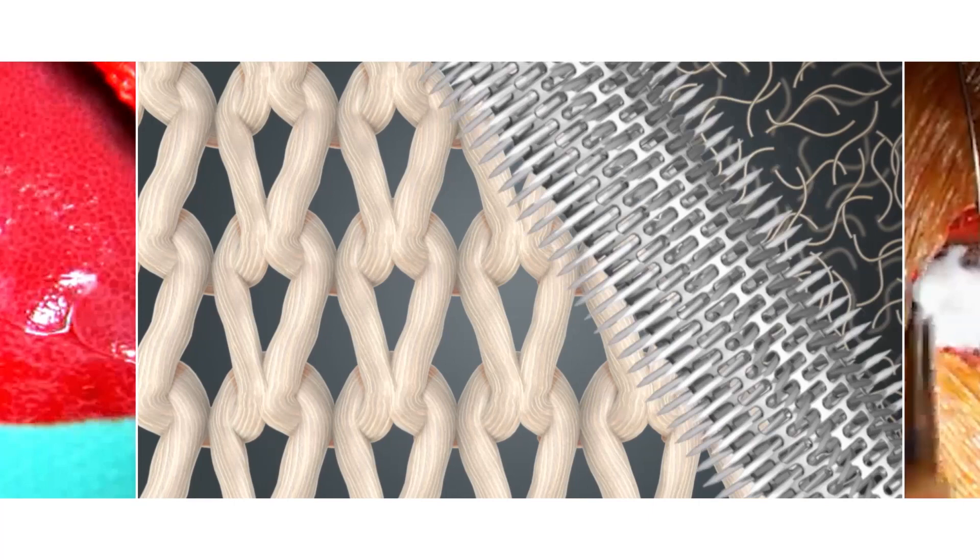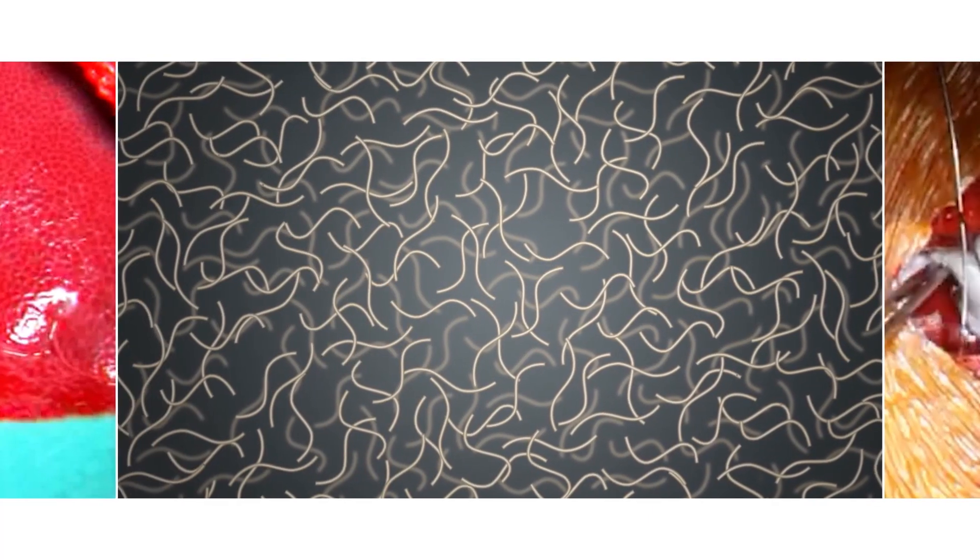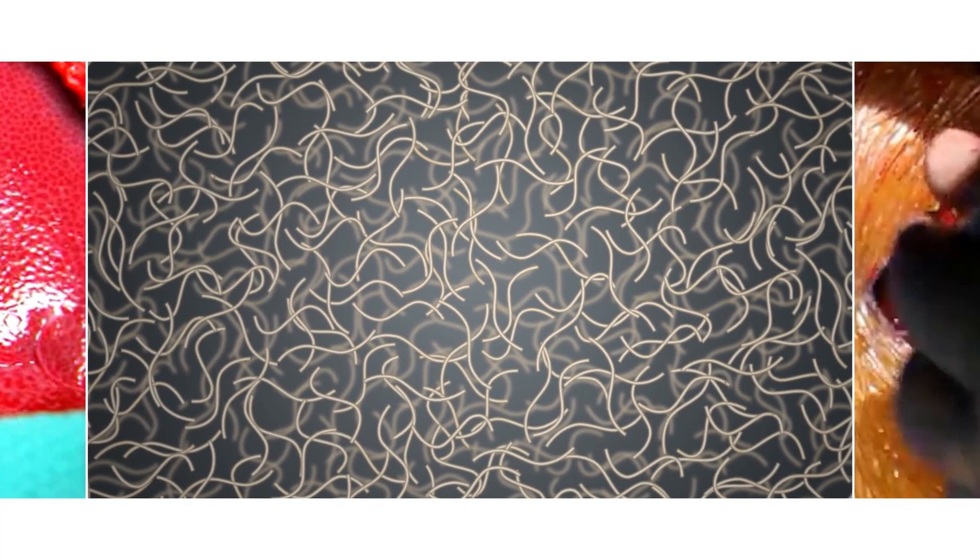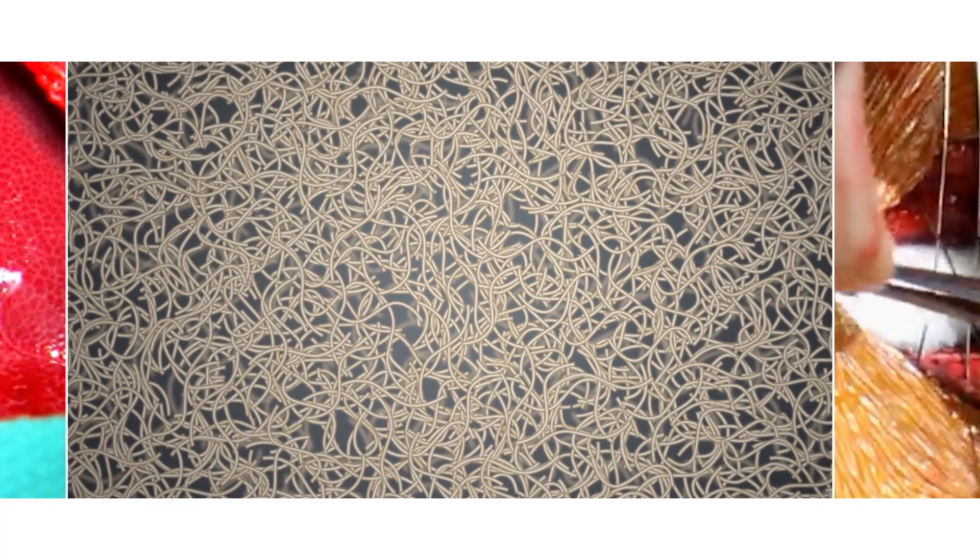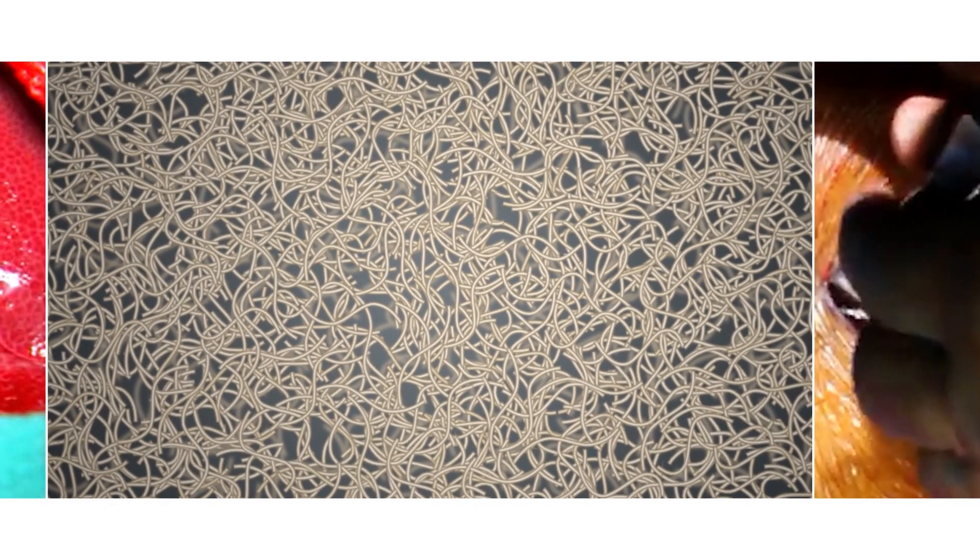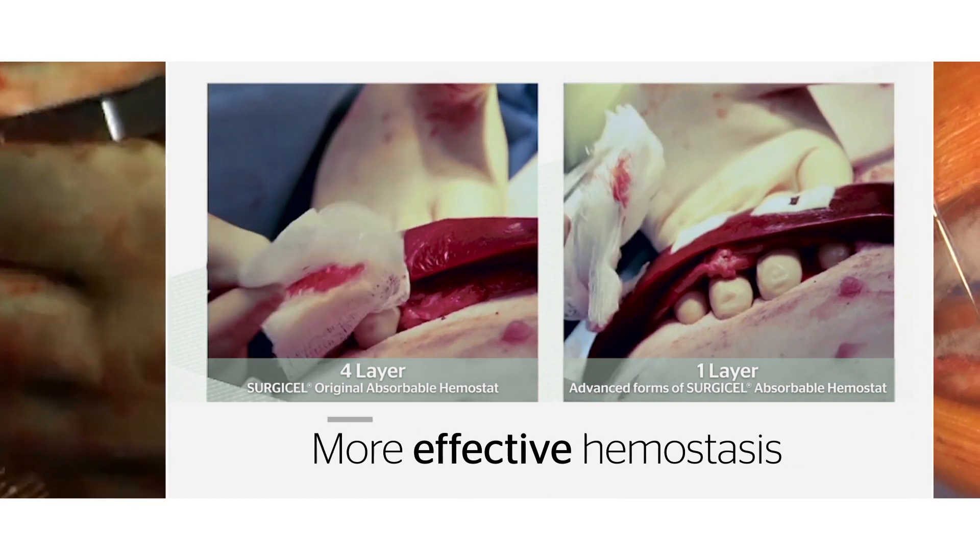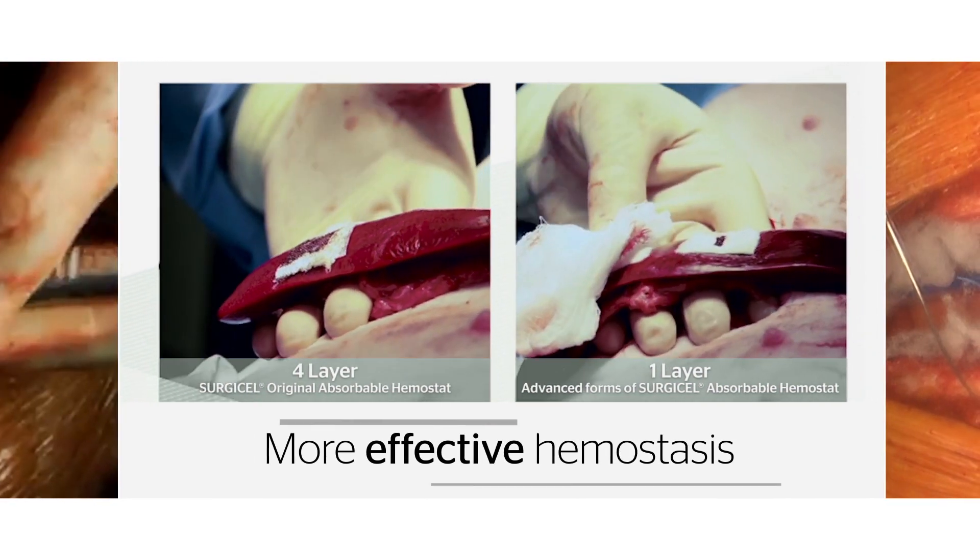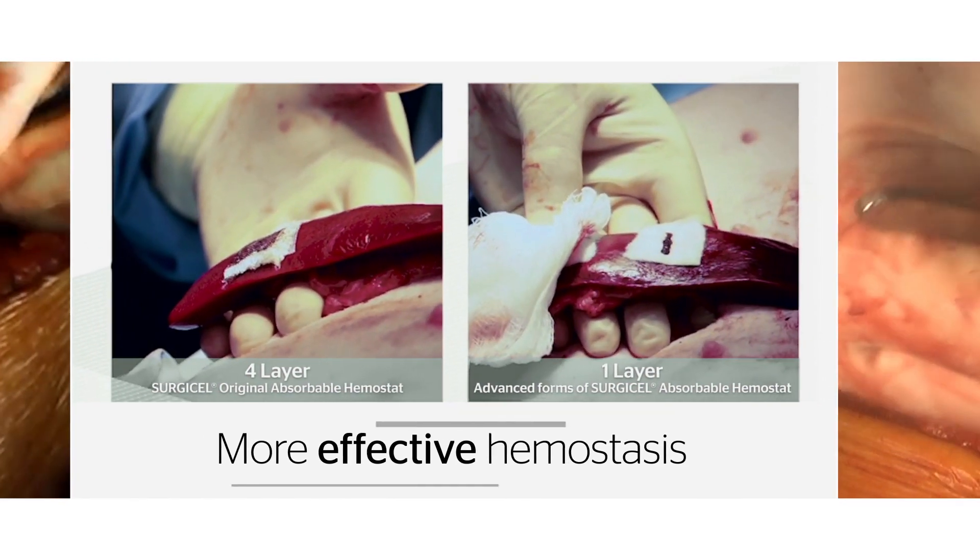These fibers are then used to create non-woven materials with substantially more ORC per unit area. With more ORC available to affect hemostasis, just one layer of Surgicel Snow or Surgicel Fibrilar is more effective than four layers of Surgicel Original.